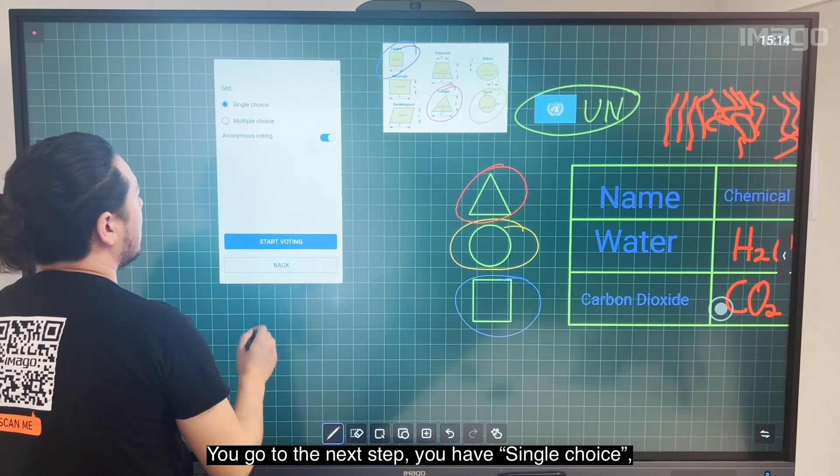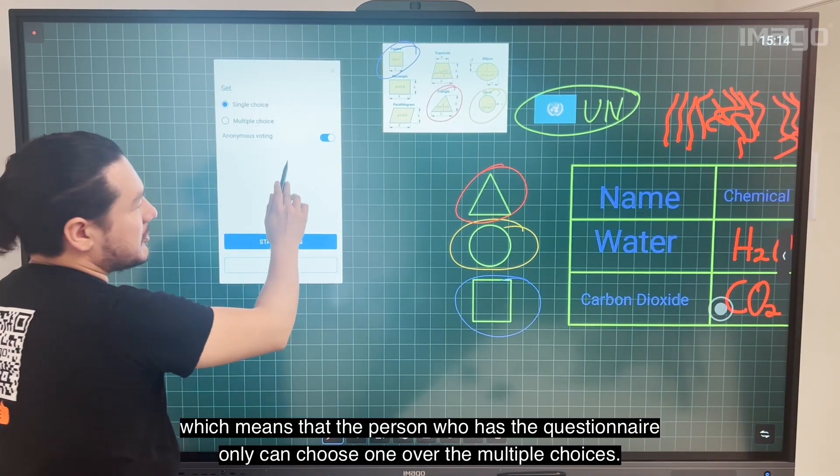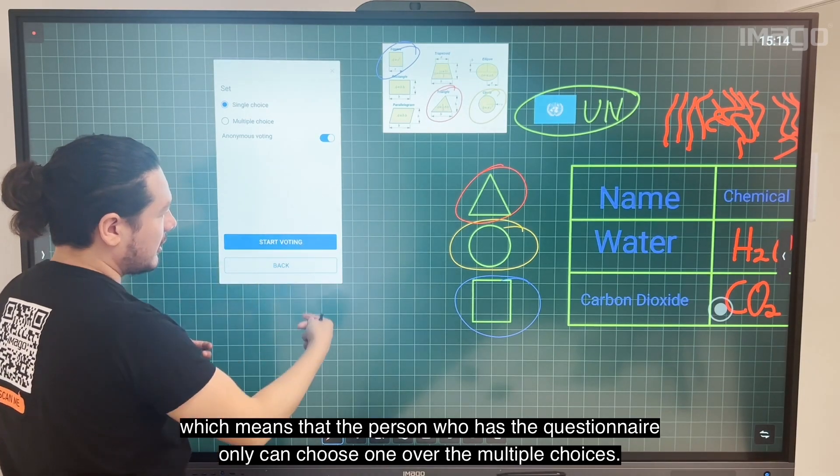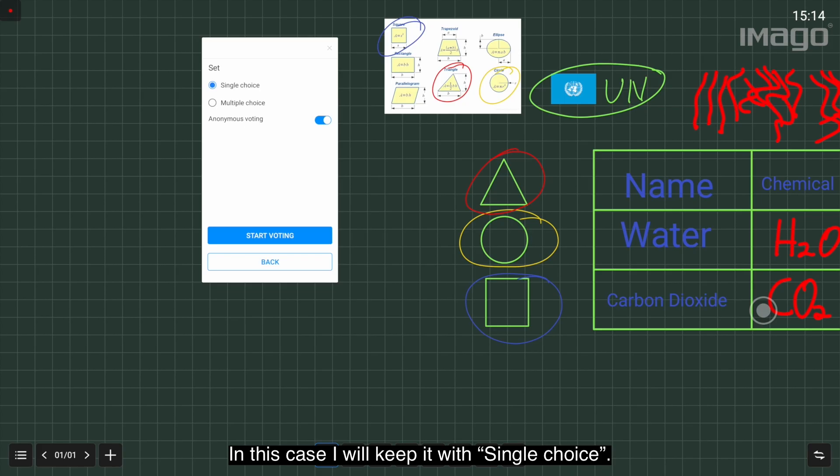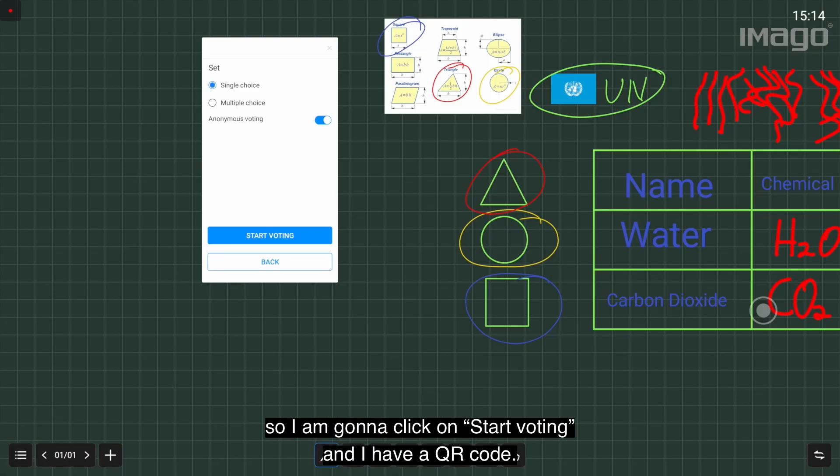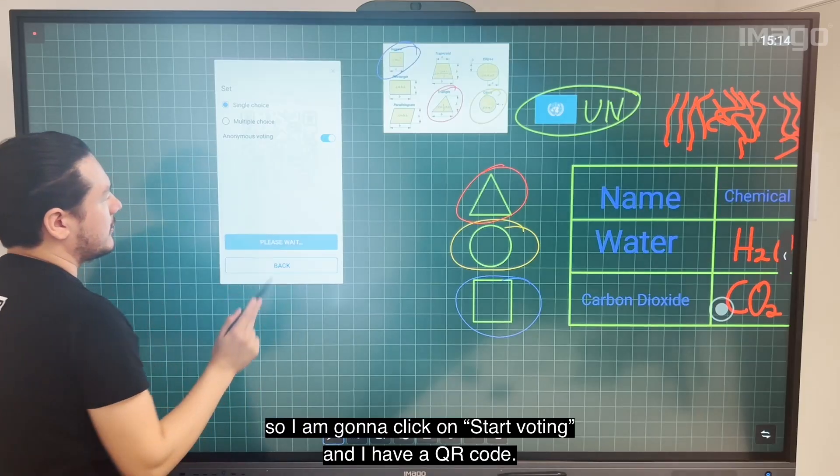This information you can edit if you prefer. You go to the next step. You have Single Choice, which means the person who has the questionnaire can only choose one of the multiple choices. In this case I'm going to keep it with Single Choice. I don't mind if I don't see the name of the person who will vote, so I'm going to click Start Voting.